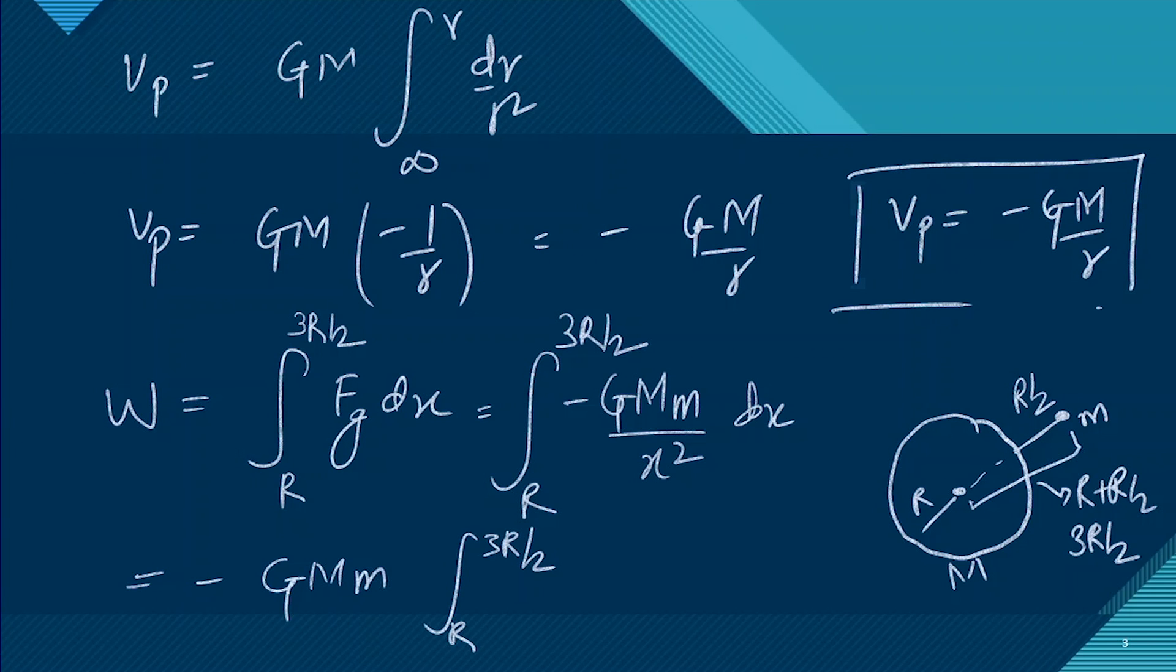Now integrating this integral, the work that should be done is GMm, integral from R to 3R/2 of dx/x². So this integral will be minus 1/x.